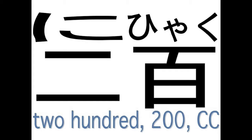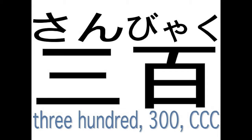There is one slight exception where the reading changes just a little bit. For three hundred, it's not sanhyaku — that's incorrect. It's sanbyaku. It's the only case where it occurs. Three hundred uses a different reading of hundred: byaku instead of hyaku.